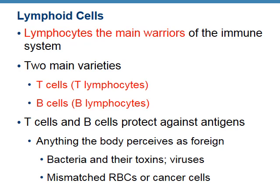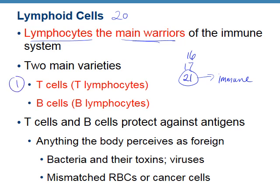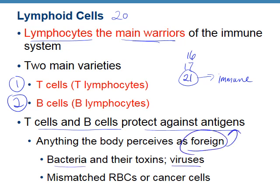Since we went out of order — we did endocrine, blood, and immune cells earlier — this is just hitting the highlights as a recap. Lymphocytes are the main warriors of the immune system. We have T cells and B cells, which protect against foreign antigens: bacteria, viruses, toxins produced by bacteria, wrong red blood cells from transfusion, and cancer or tumor cells. T cells and B cells are found in lymphoid organs.